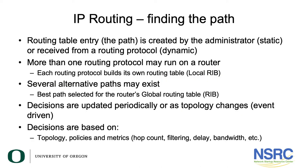What is IP routing? IP routing is basically finding the path for the IP packet. A routing table entry is created by the administrator or received from a routing protocol. If it's created by the administrator, it's known as a static route. If it's received from the routing protocol, it's known as a dynamic route. More than one routing protocol may run on a router. Each routing protocol builds its own routing table, known as the Local Routing Information Base, or RIB. Several alternative paths may exist, but the best path is selected for the router's global routing table.